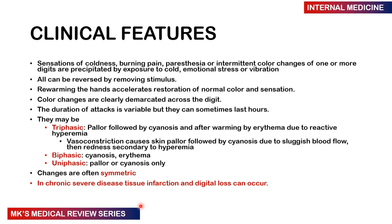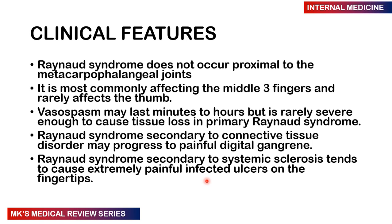In chronic disease, tissue infarction and digital loss can be seen. Reynolds syndrome does not occur proximal to the metacarpophalangeal joints — this is very important to remember. It most commonly affects the middle three fingers and rarely affects the thumb. Vasospasms can last minutes to hours, but if severe enough can cause tissue loss, especially in primary Reynolds syndrome. Secondary Reynolds syndrome due to connective tissue disorders may progress to painful digital gangrene, and secondary to systemic sclerosis it can cause extremely painful infected ulcers on the fingertips.